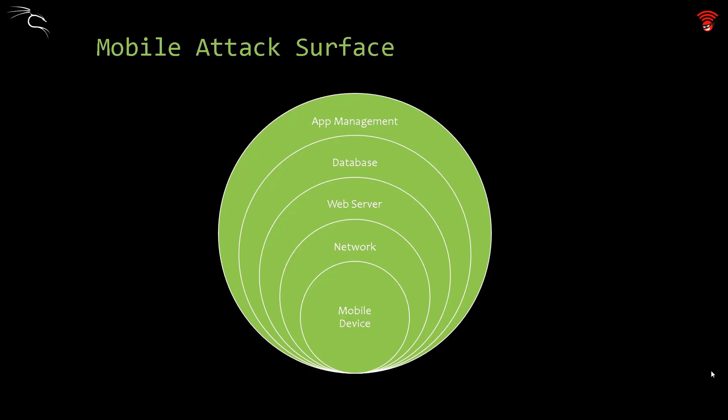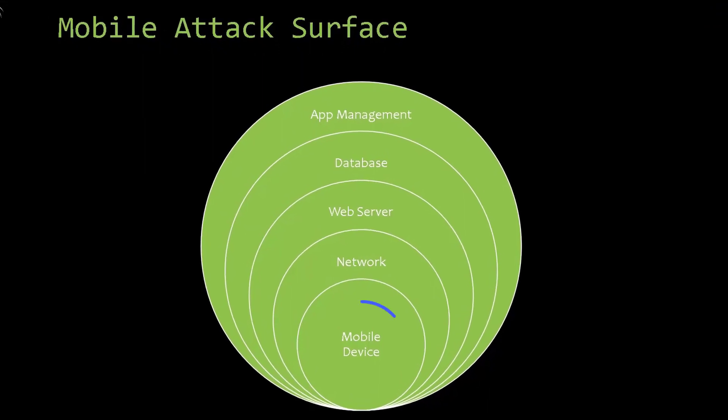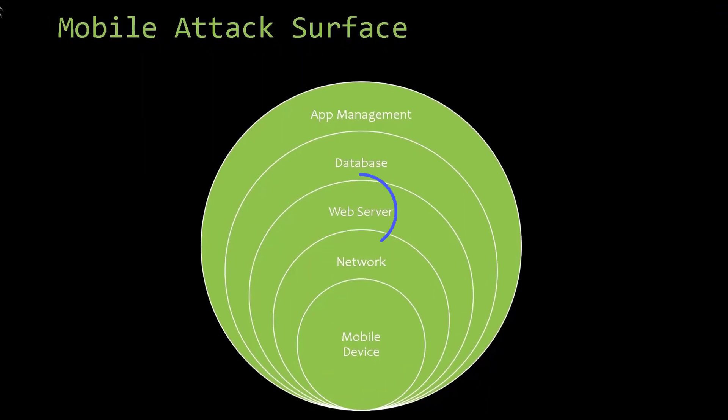Nowadays, mobile devices dominate consumer use and habits from a personal and enterprise perspective. They are ubiquitous — they are found everywhere. The basic risk segments can be divided into five main mobile application security categories: starting from the mobile device itself, passing through network security, web server security, database security, and application management procedures.